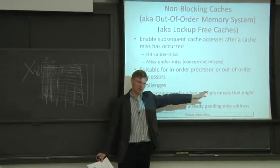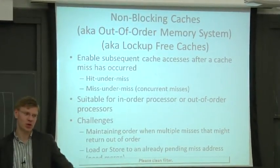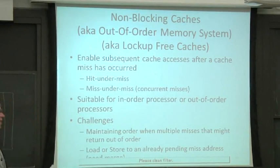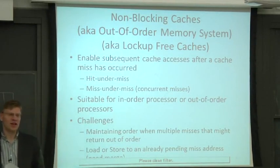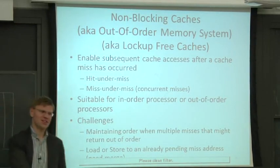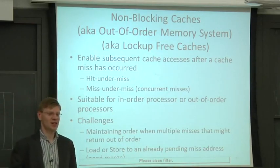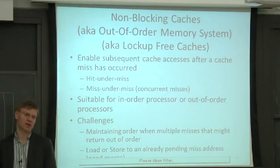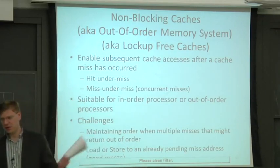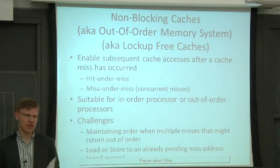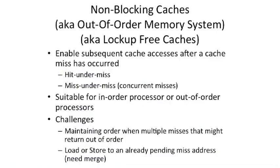A big point: this is not only for out-of-order processors. You can actually hook up a non-blocking cache to an in-order processor, or even a VLIW in-order processor. One way to do that is when you take the cache miss, you mark the register as not being there, so when you go to actually read the data, you block. You can have in-order processors with out-of-order memory systems, and out-of-order processors with out-of-order memory systems — both are possible.